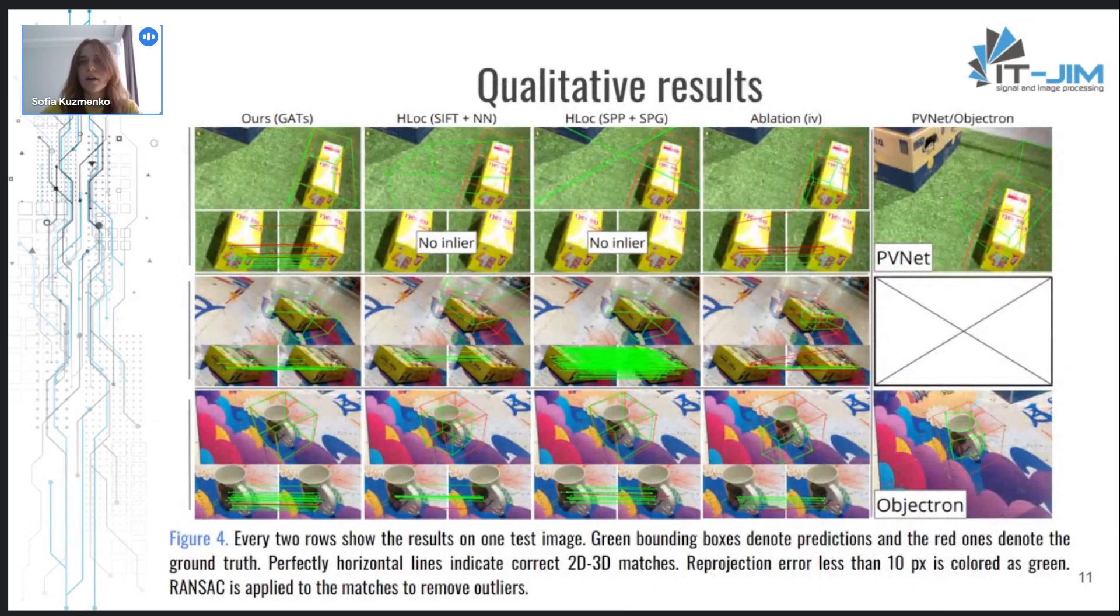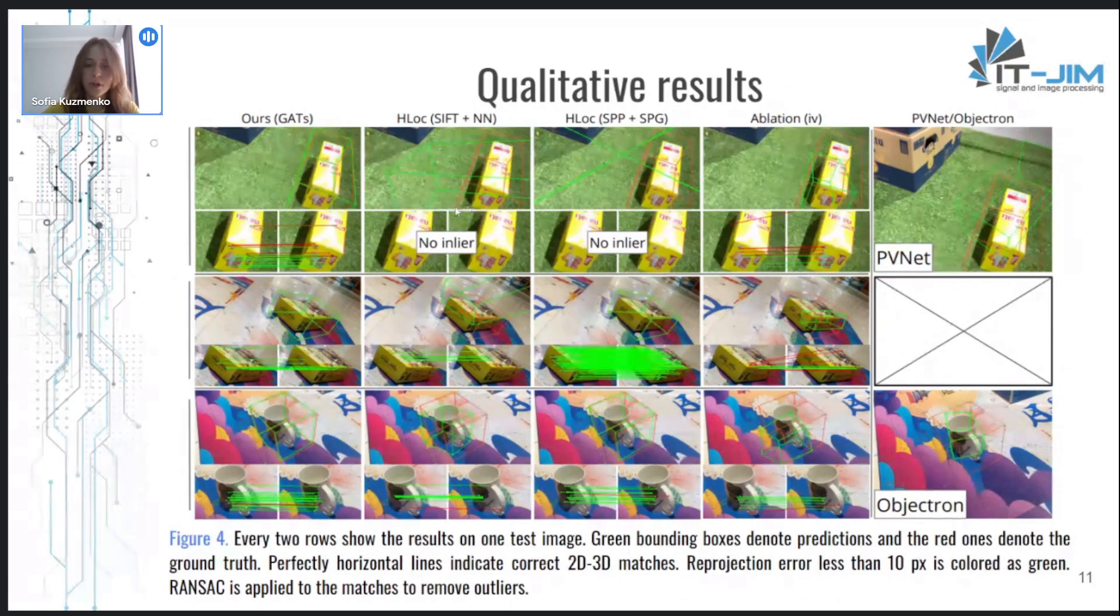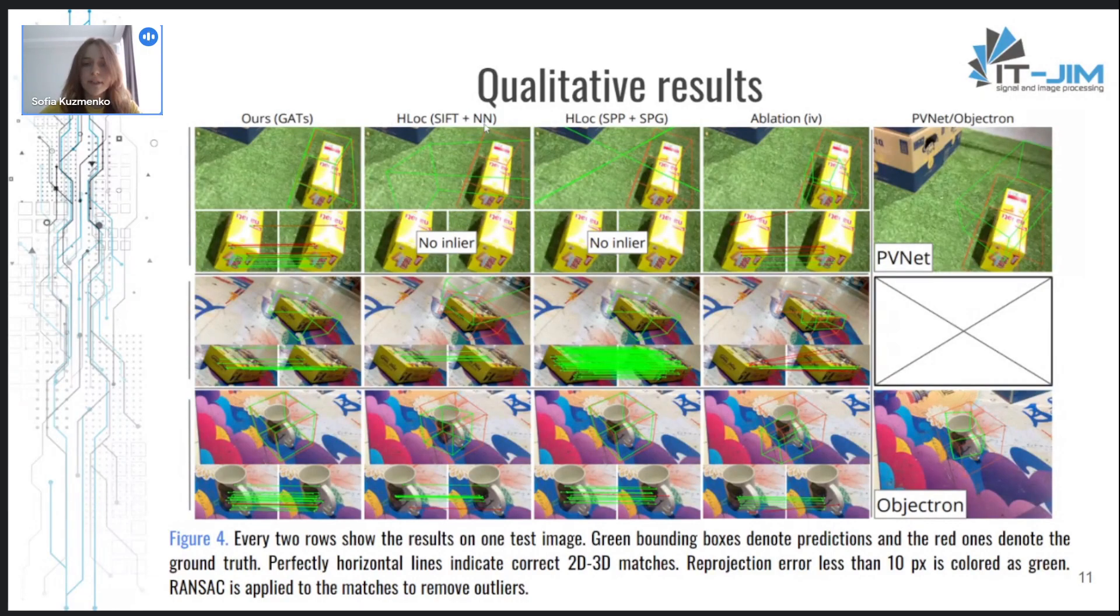And here are some qualitative comparisons with baseline methods. You may observe that OnePose is able to produce a larger quantity of matches compared, for example, with SIFT plus nearest neighbor. And the matches from the OnePose are also more accurate and less noisy.